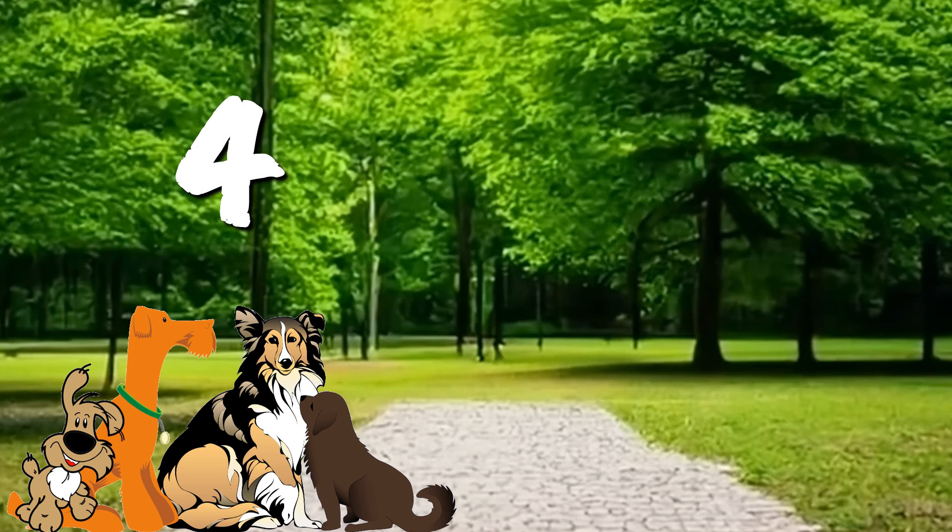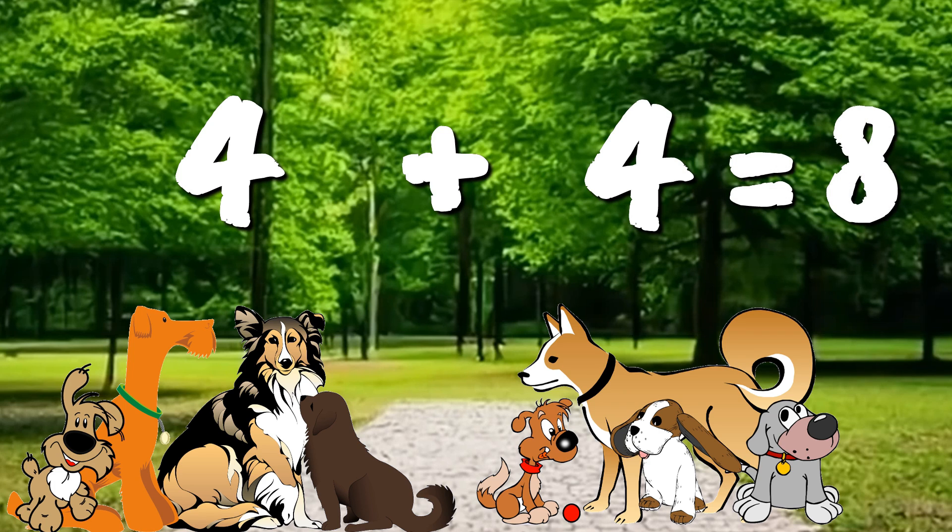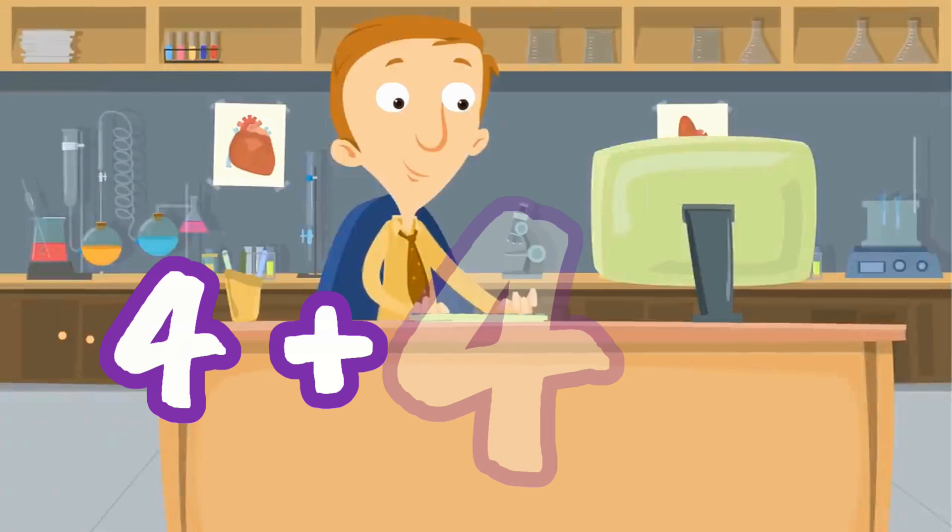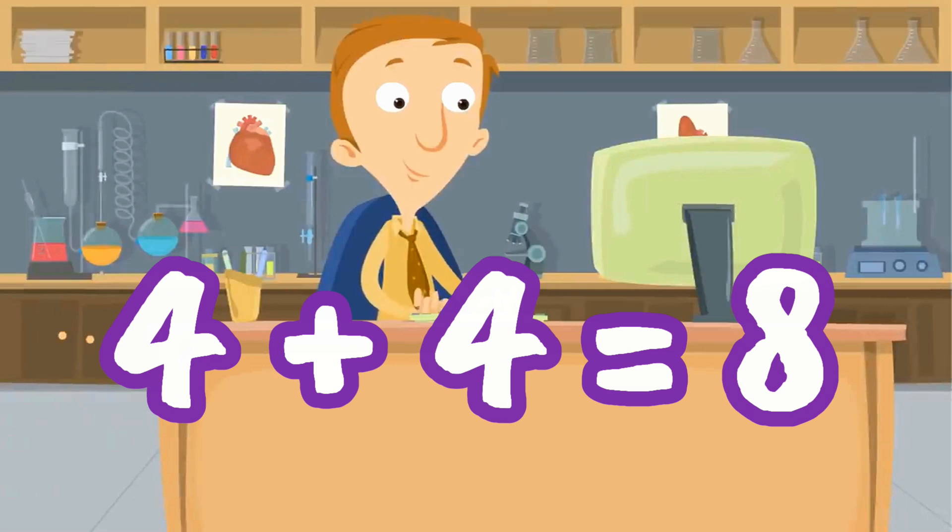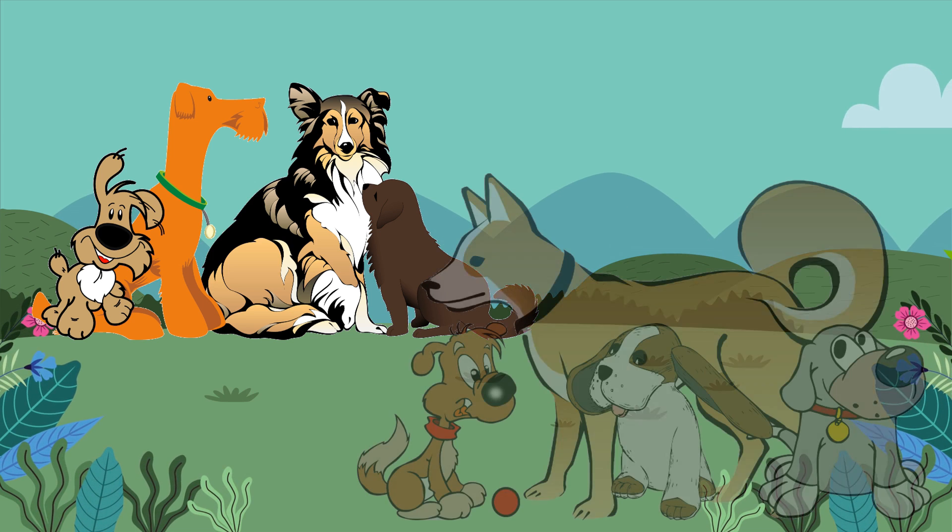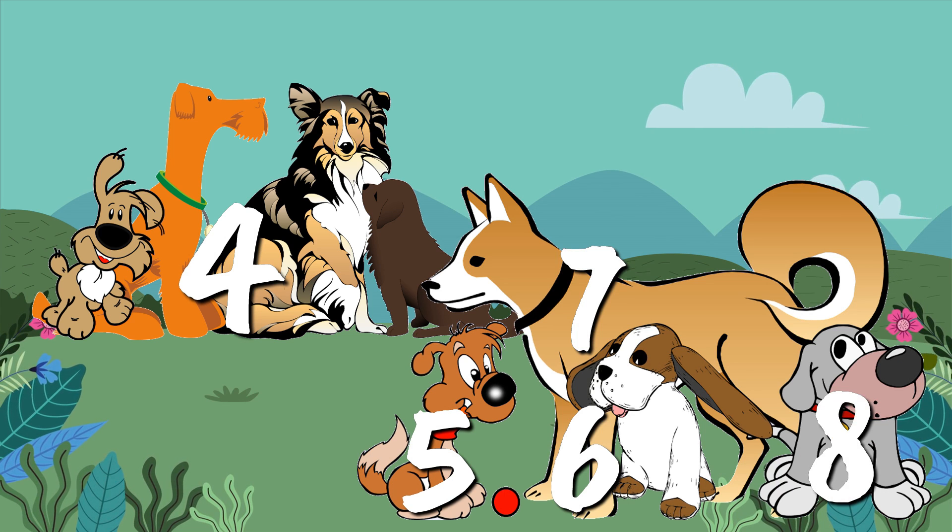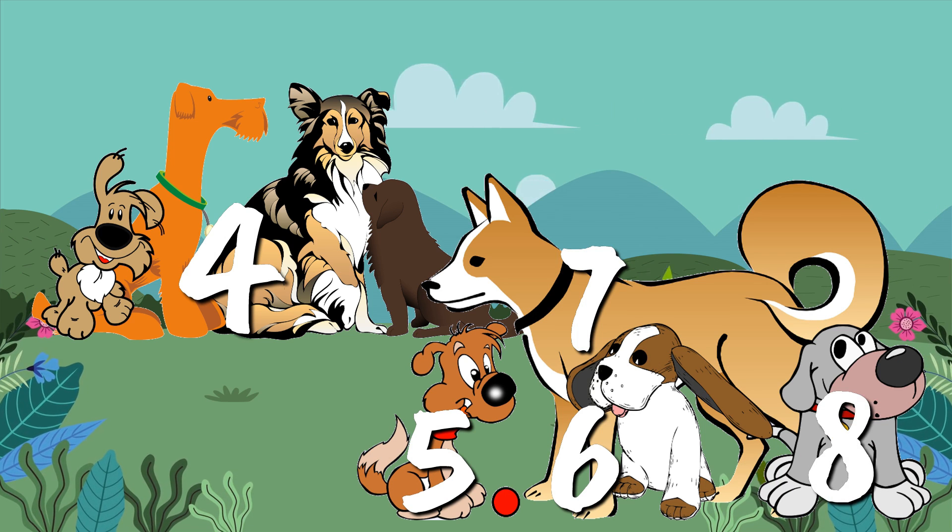What if there were four dogs in a dog park and later four more dogs showed up? How fun. What is four plus four? Yeah, four plus four equals eight. Great job. We had four dogs at the park already. Then we just added four more. Four, five, six, seven, eight. Four plus four equals eight.